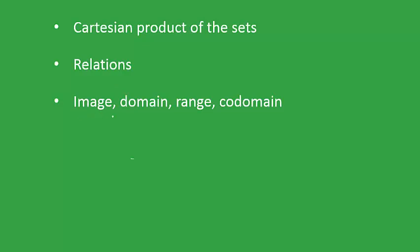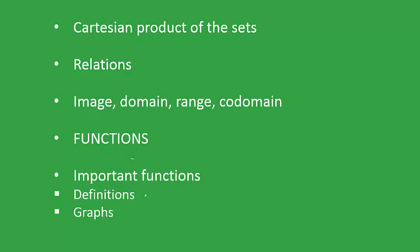Let's first talk about what we would be learning, and they would be in sequence. First, we will learn what are Cartesian products of sets. Then, we will go on to read the definition of relations, and some basic terms: images, domain, range, and co-domain. Then we will look into functions, which is of prime importance, along with some important functions using definition and graph. And lastly, the algebra of real functions, which will help us manipulate according to our needs.